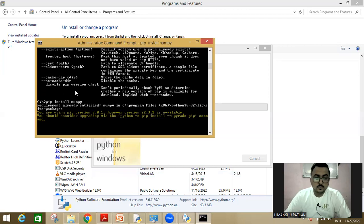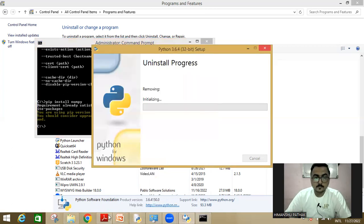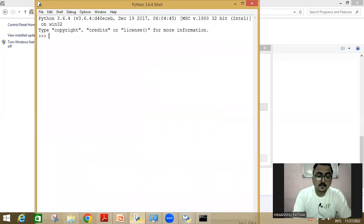If this is shown to you, then it means everything is okay in your system. Type pip install numpy and press enter. As shown here, it says requirement already satisfied, because I have already installed pip.